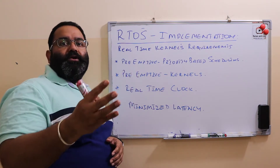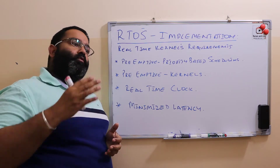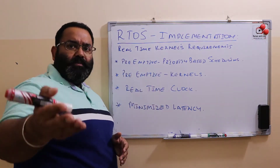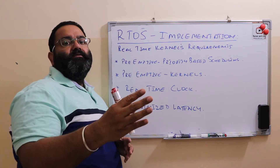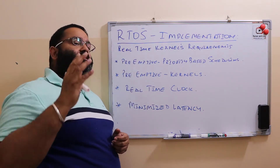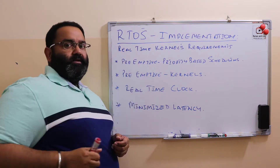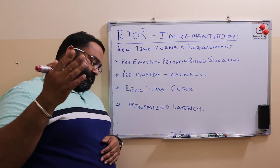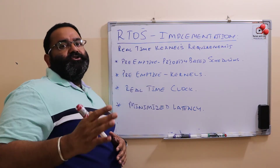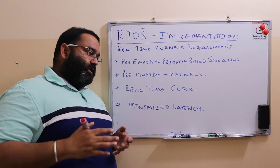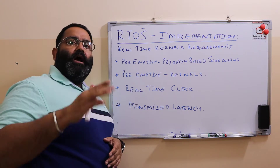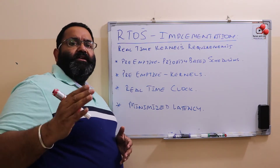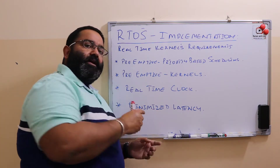The first requirement is preemptive priority-based scheduling. The second requirement is preemptive kernels — all kernel threads and processes should also be preemptive. Third, the system must support real-time clocks. Fourth, latency should be minimum. Latency is a lengthy topic and will be covered in a separate video.